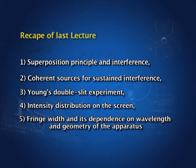We then described Young's double slit experiment and how the intensity varies on the screen in terms of bright fringe, dark fringe, bright fringe, dark fringe. We found the distance of the dark or bright fringe from the center of the screen, and the fringe width — the distance between two consecutive bright or dark fringes — using the geometry of the apparatus.